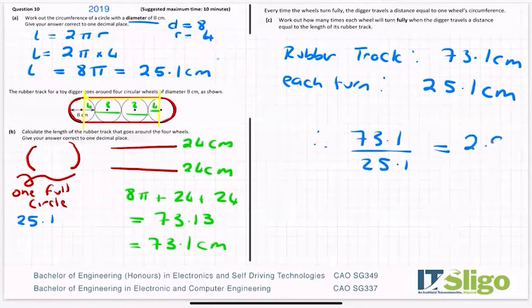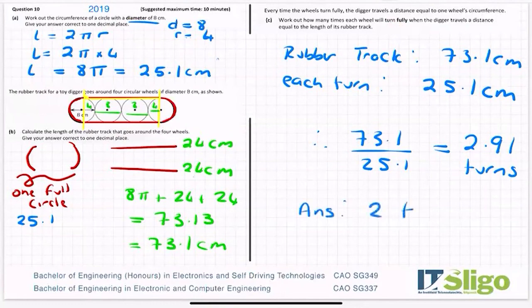And I'm getting 2.91 turns. Work out how many times each wheel will turn fully when the digger travels a distance equal to the length of its rubber track. Now, why does it have that word fully turned? Well, your answer then has to be two turns, because the wheel didn't quite get to complete the third turn. So it has two full turns.